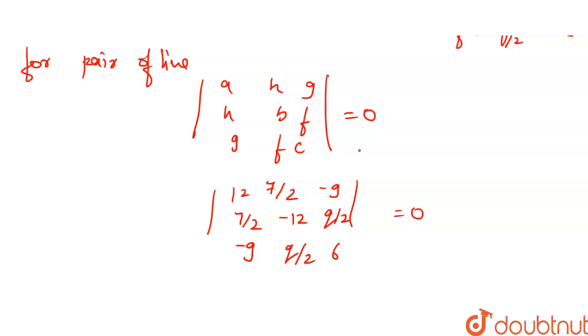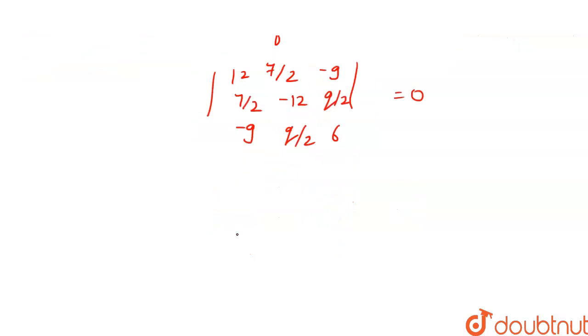Expanding this determinant: 12 times (minus 72 minus q² by 4), then minus 7 by 2 times (21 minus 9q by 2).